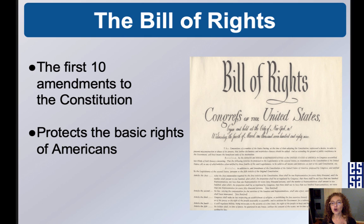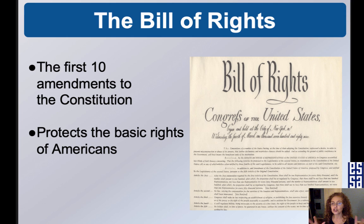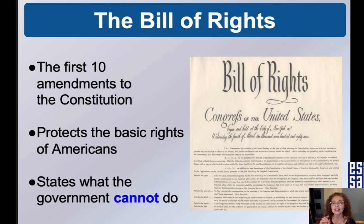When the framers wrote the Constitution, they didn't really focus on individual rights — they were mainly focused on setting up the large government. The people were a little upset; they wanted their individual rights protected. That's what the Bill of Rights does: it protects the basic rights of Americans and states what the government cannot do.